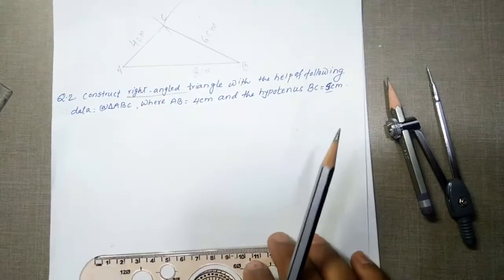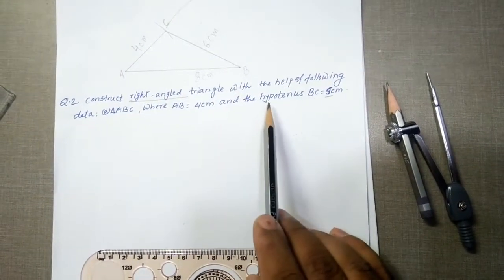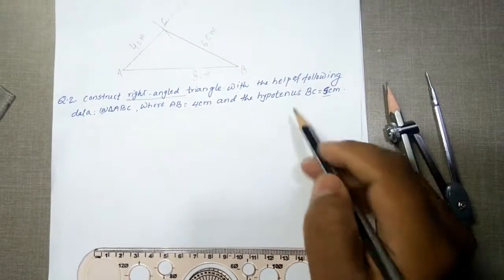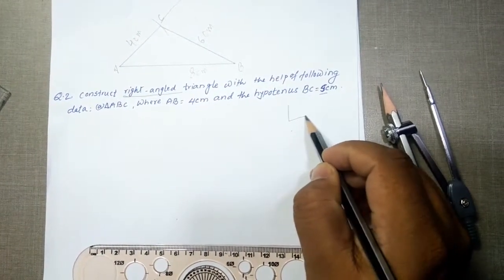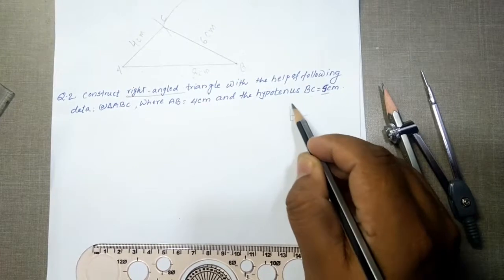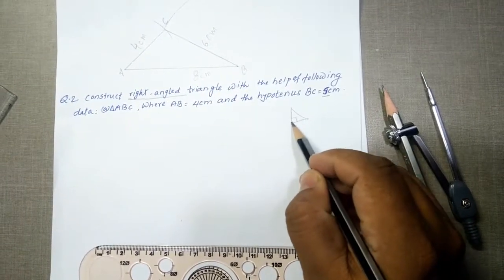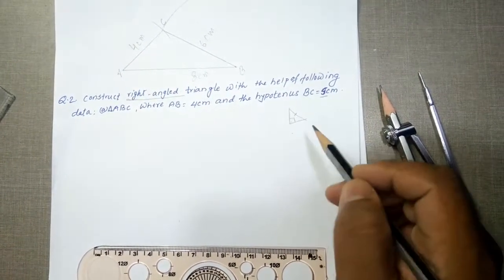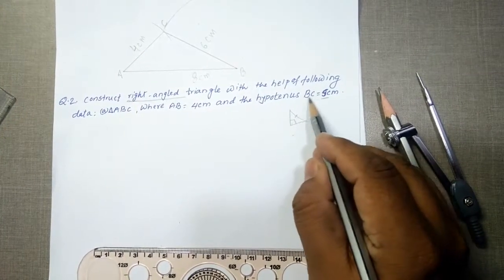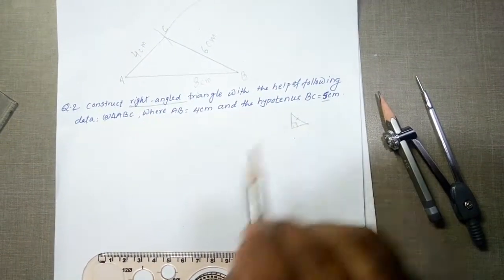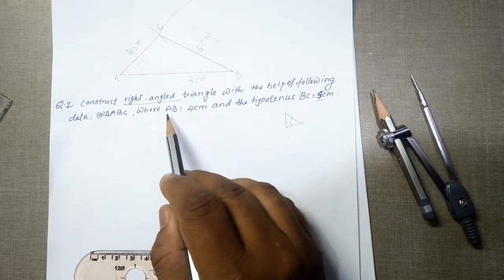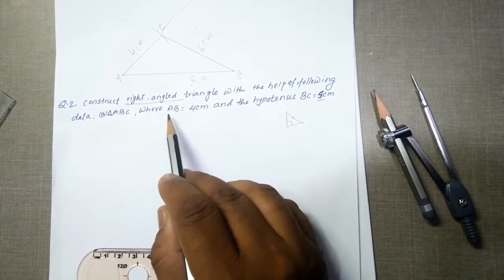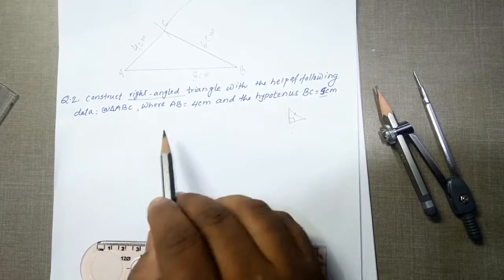So what we need to do is: the hypotenuse is the side which is opposite to the right angle, that is 90 degrees. So this will be the hypotenuse, and obviously I am not going to take this as a base. So I am left with the second side, that is AB, so I am going to take AB as the base.